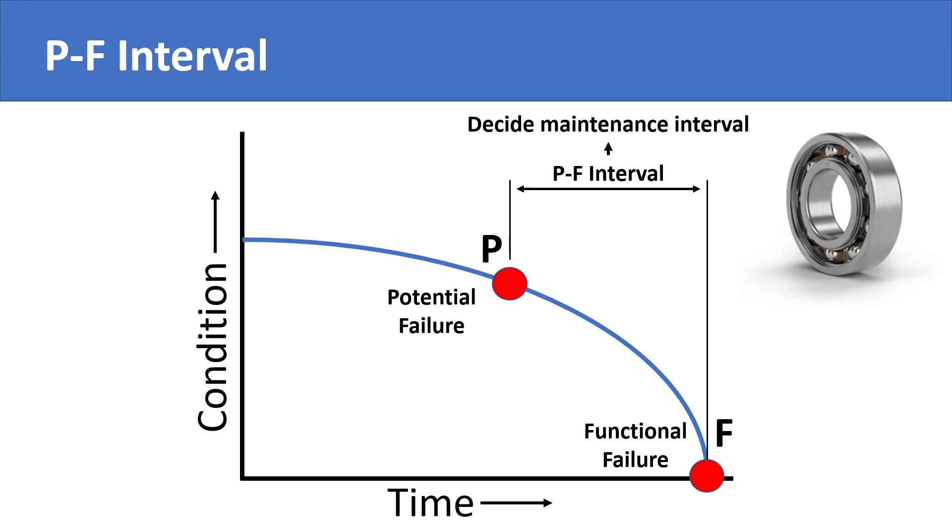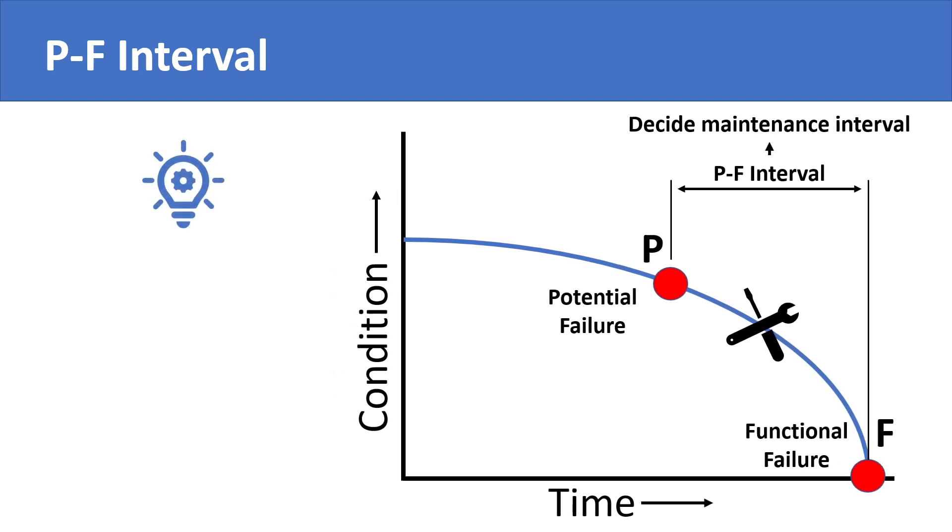Your maintenance interval should be smaller than the PF interval so you are able to catch the potential failure before the failure actually occurs. PF interval helps maintenance departments in developing maintenance schedules as well as in planning failure finding tasks.